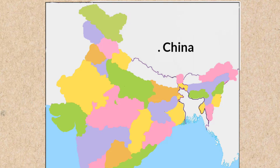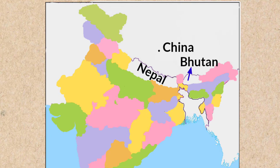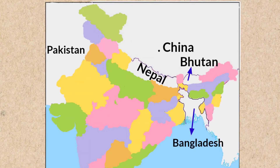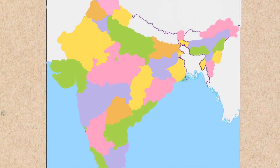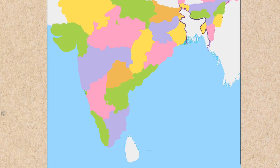The boundary countries of India are: China, Nepal, Bhutan — here the arrow shows the country Bhutan — Bangladesh, Pakistan, Myanmar, and Sri Lanka.